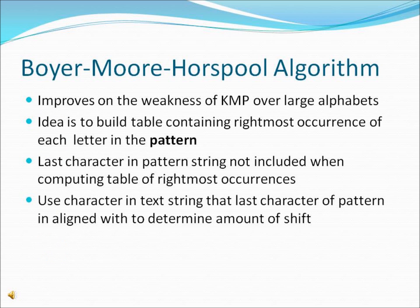The Boyer-Moore-Horspool algorithm improves upon Knuth-Morris-Pratt over large alphabets. The central idea is to build a table which contains the number corresponding to each letter's rightmost occurrence in the pattern. The last character of the pattern isn't taken into account when building this table, as the character in the text string that the last character of the pattern is aligned to determines the amount of shift.